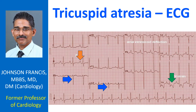The biphasic P wave in V1 shows a sharp atrial intrinsic cord deflection. The sharp downward deflection from the peak of the P wave to the trough of the P wave is a pseudo left atrial overload pattern seen in right atrial overload.